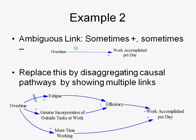For example, 'overtime' leads — after some delay (shown with a special marker) — to 'fatigue.' Fatigue decreases 'efficiency,' and efficiency affects 'work accomplished per day.' On the other hand, overtime also leads to tasks outside of work, also decreasing efficiency, but it also leads to more time working, which can increase work accomplished per day. This illustrates how you unpack an ambiguous link between A and B into a set of smaller pathways.